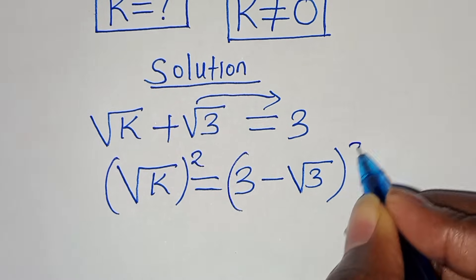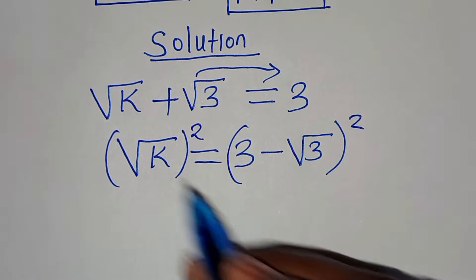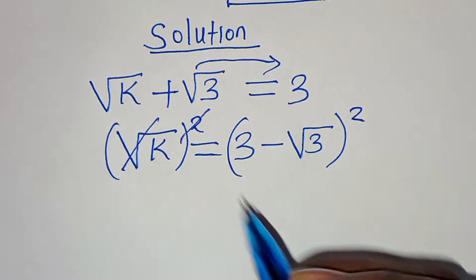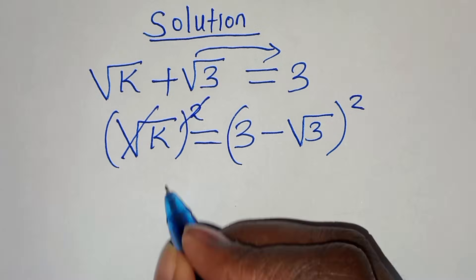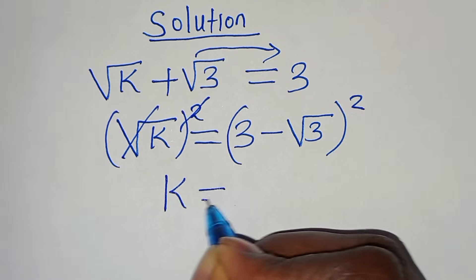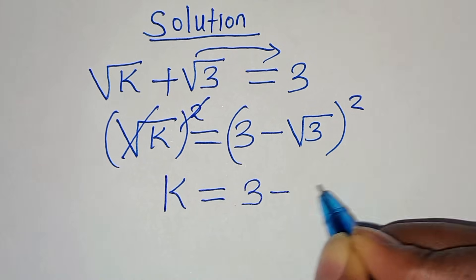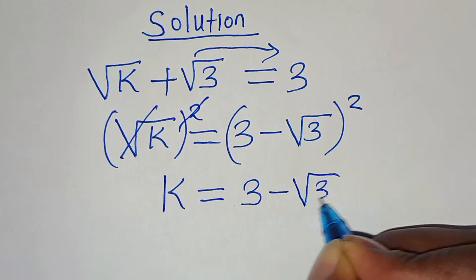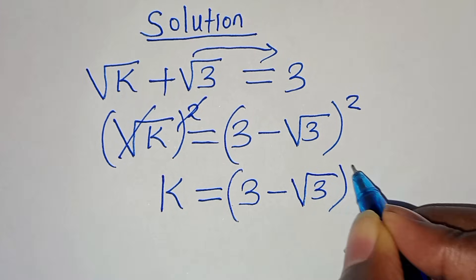The next step is to square both sides, so that on the left hand side we eliminate the square root sign. This implies that k equals (3 minus square root of 3) raised to the power of 2.